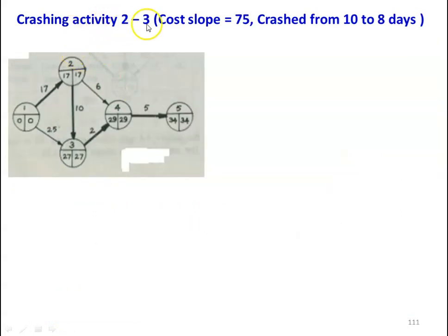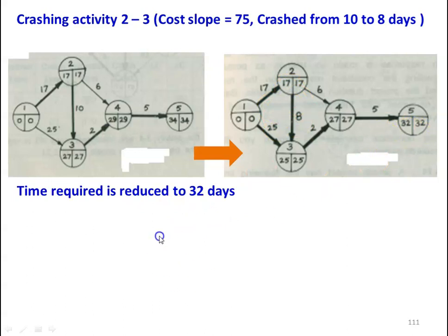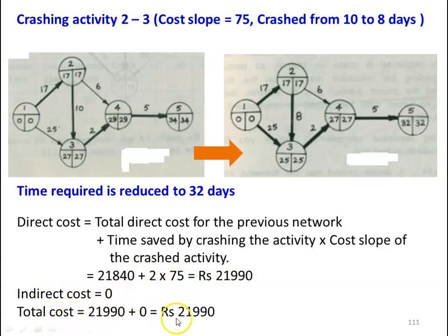Now, crashing activity 2-3 with cost slope 75, from 10 days to 8 days. The project duration is reduced to 32 days. Direct cost = 21,840 plus (2 days saved × 75) = 21,990. Indirect cost equals 0, so total cost equals 21,990.